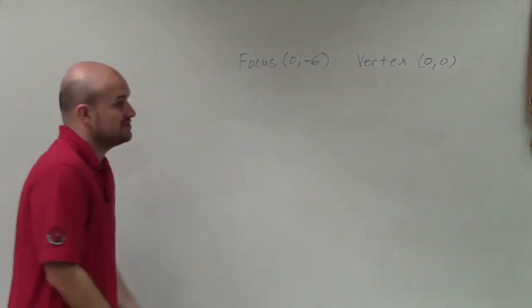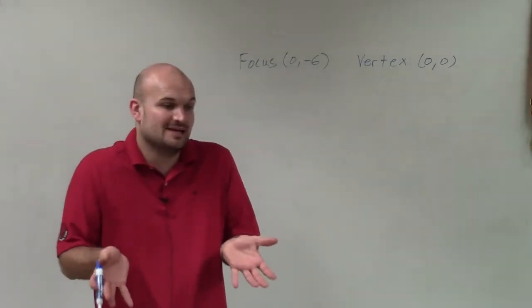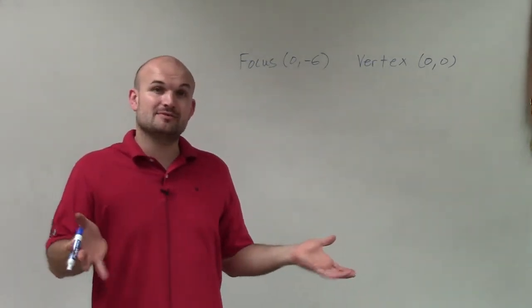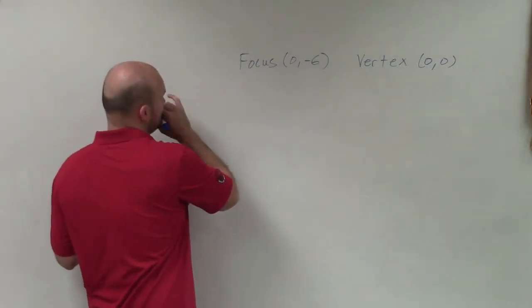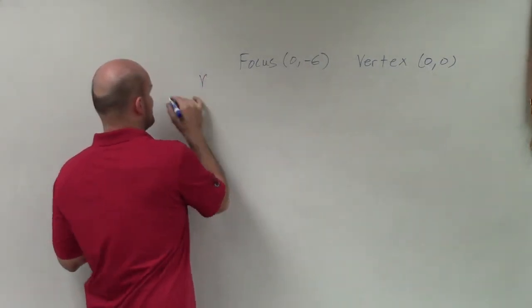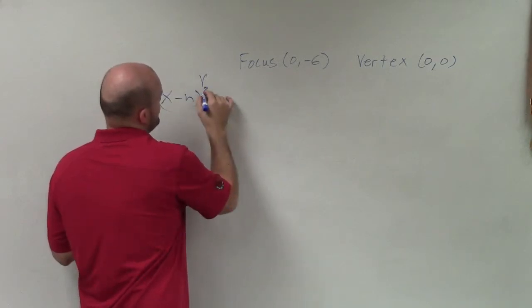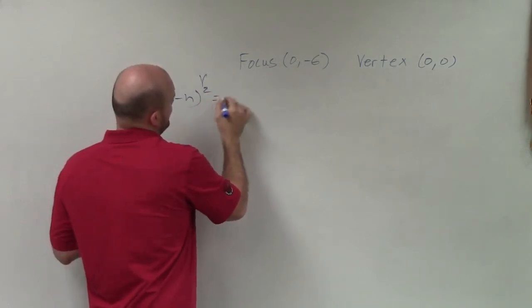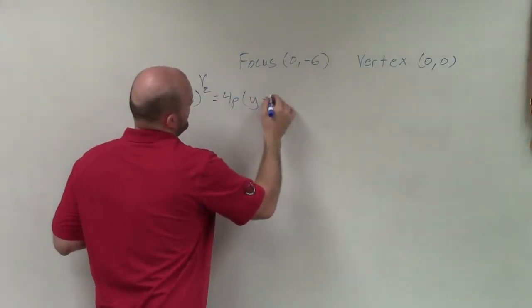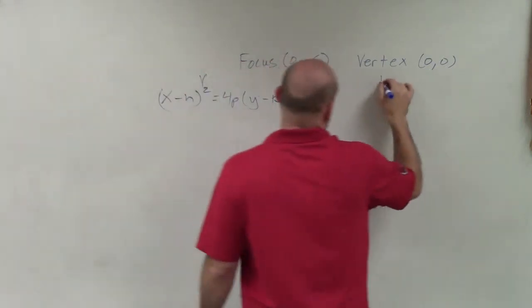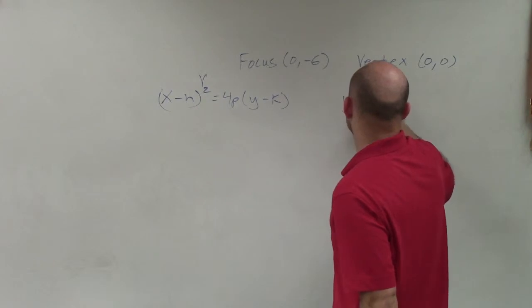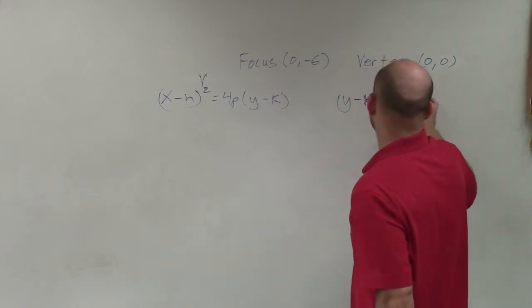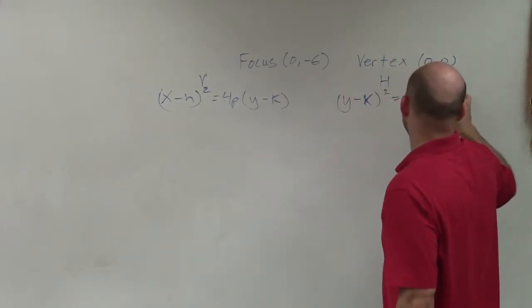To solve this problem, first we need to determine: is this going to have horizontal or vertical axis of symmetry? That's very important. If it has vertical axis of symmetry, the formula is (x - h)² = 4p(y - k). If it has horizontal axis of symmetry, then it's (y - k)² = 4p(x - h).